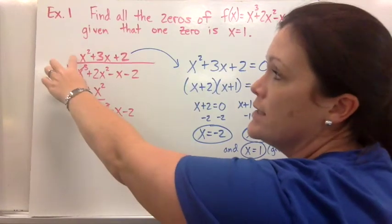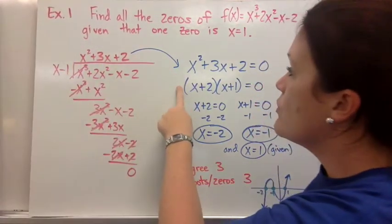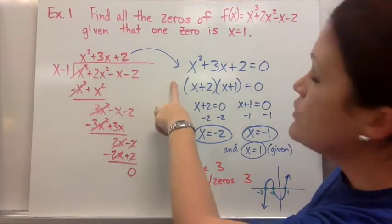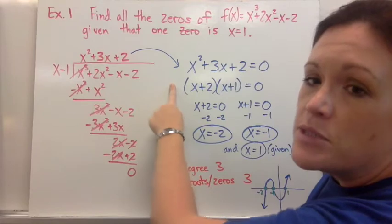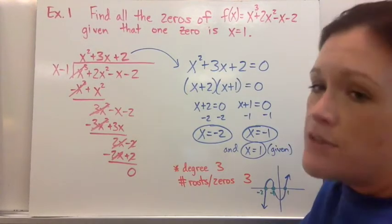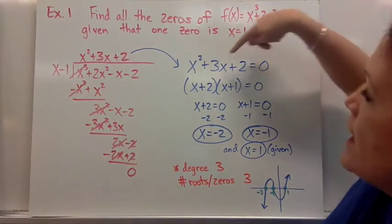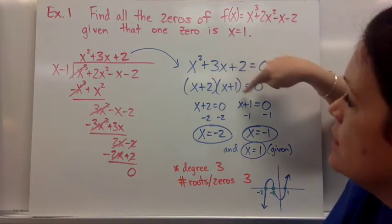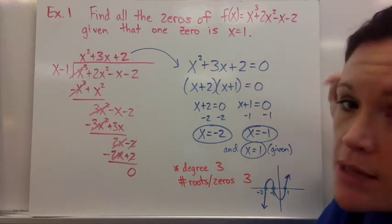So you take your quadratic that's left, and you bring it over to another piece of your paper, because there's not a lot of room right there. And you would see if you could factor it, because factoring is definitely the quickest and simplest way to finish solving for your other zeros. So this one did factor into (x + 2) and (x + 1), because they multiply to give me 2 and they add up to give me 3, like we talked about with factoring.